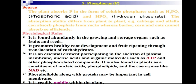The next primary nutrient is phosphorus. Plants absorb phosphorus in the form of soluble phosphates such as phosphoric acid (H3PO4) and hydrogen phosphate (HPO4). The absorption ability differs from plant to plant — cabbage and alfalfa can absorb phosphate from rocks, whereas barley, corn, and oats cannot absorb it as efficiently.